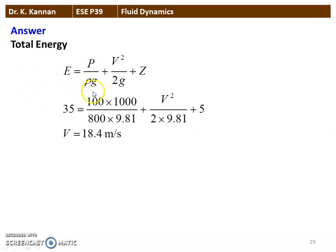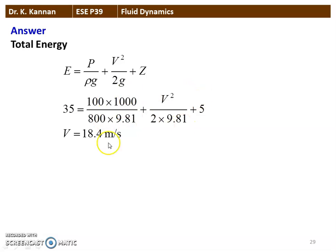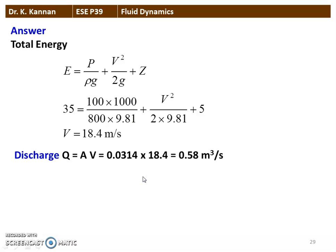Total energy E = P/ρG + V²/2G + Z, from Bernoulli's equation. With total energy = 35 kJ: 100000/(800 × 9.81) + V²/(2 × 9.81) + 5 = 35. Rearranging and solving, velocity V = 18.4 meters per second. Discharge Q = A × V = 0.0314 × 18.4 = 0.58 meter cube per second.